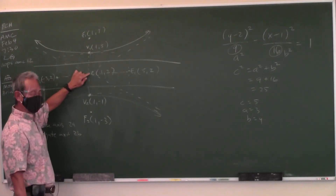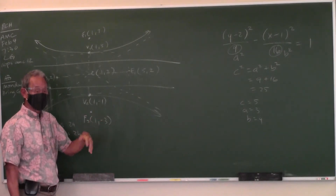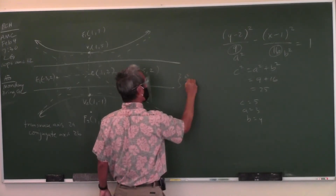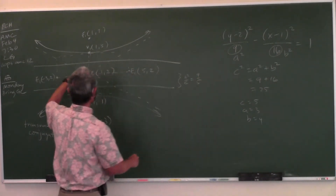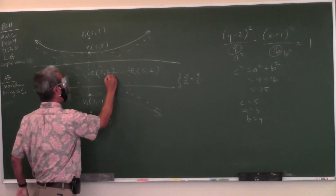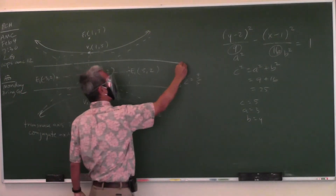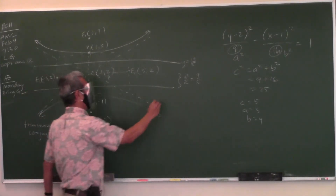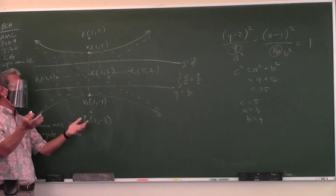The distance from the center to the directrix is a²/c — same formula as with an ellipse since the definitions are similar. Here that's 9/5. From the center y-coordinate of 2 (which is 10/5), going 9/5 up gives y = 19/5, and going 9/5 down gives y = 1/5. Those are your two directrices.